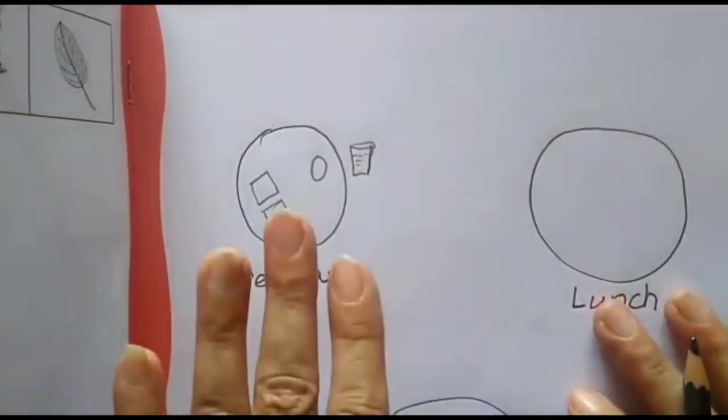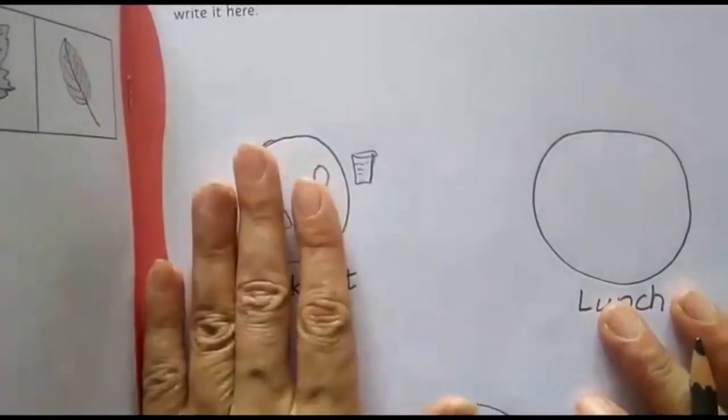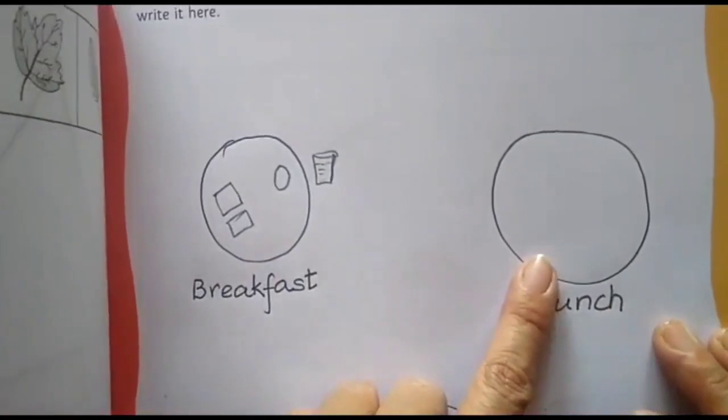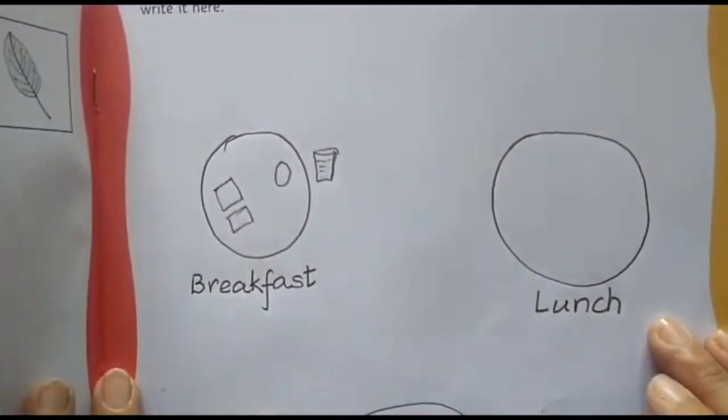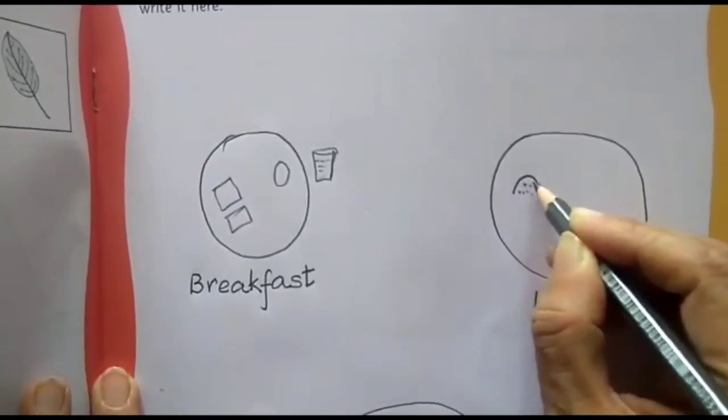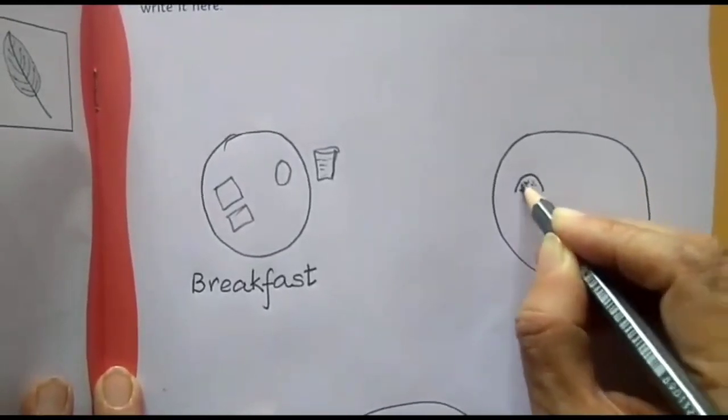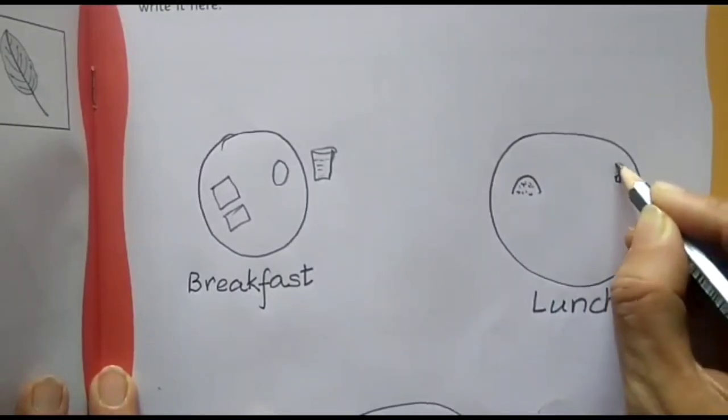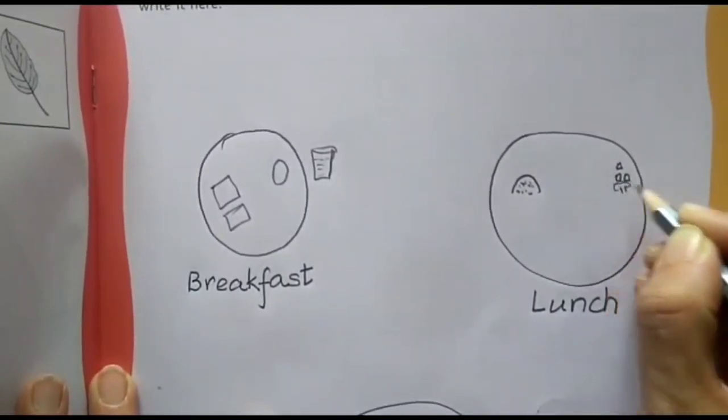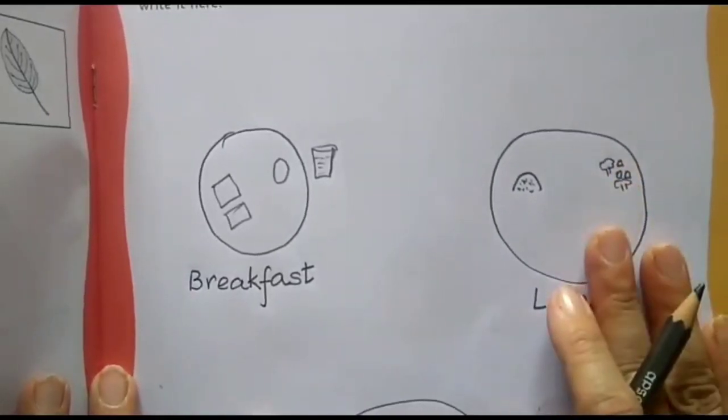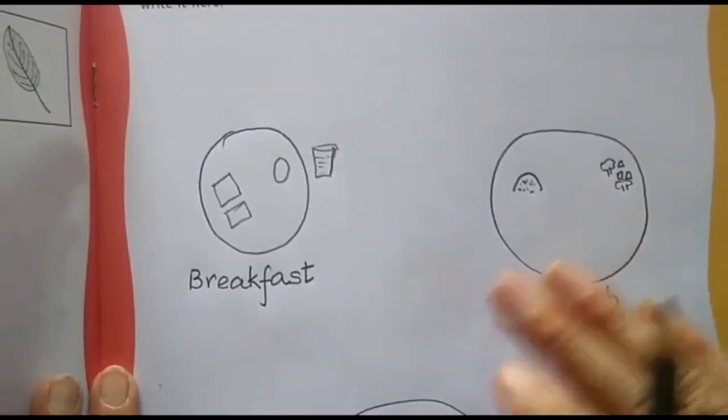Likewise whatever you had you can draw in this breakfast plate. At lunch, now today I had in lunch I took little rice and cauliflower vegetables so small pieces of potato and cauliflower. You can draw like this whatever you had, I am drawing what I had so likewise you have to draw what you had.